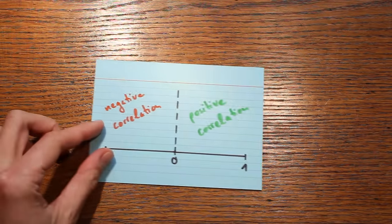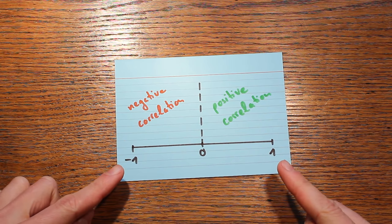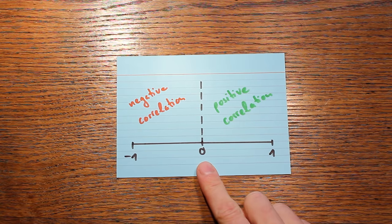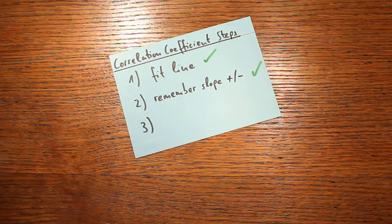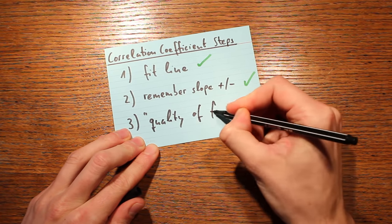Now comes the third step, and this one is trickier. So far we know whether the correlation coefficient is between zero and one or zero and minus one, but we don't know its magnitude yet. Is it close to an extreme value like 0.92, or is it small in magnitude because the correlation is weak and closer to zero? The correlation coefficient figures this out by looking at the quality of the fit of the straight line to the data.